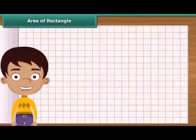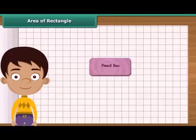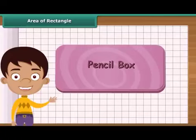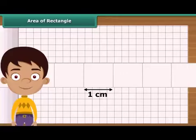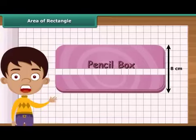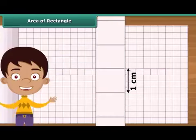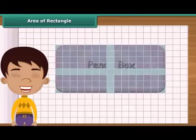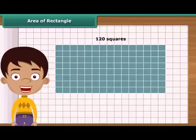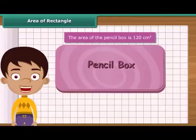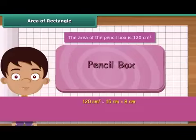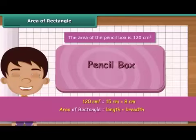Let us find the area of a rectangle by counting squares. Take a rectangular pencil box and place it on squared paper. The length of the box is 15 centimeters; arrange 15 squares of side 1 centimeter along its length. The breadth of the box is 8 centimeters; arrange 8 squares along its breadth. Altogether, 120 squares have been arranged, so the area of the pencil box is 120 square centimeters, which is 15 centimeters multiplied by 8 centimeters. We can generalize that the area of any rectangle is obtained by multiplying its length and breadth.